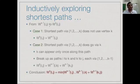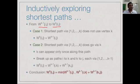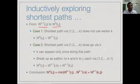Since this is an inductive definition, supposing we know the shortest paths using vertices 1 to k-1, how do we compute the shortest paths that use 1 to k? There are two cases. The first case is that vertex k is not useful: the shortest path from i to j does not use vertex k, so it suffices to use 1 to k-1. In this case w_k(i,j) equals w_{k-1}(i,j).